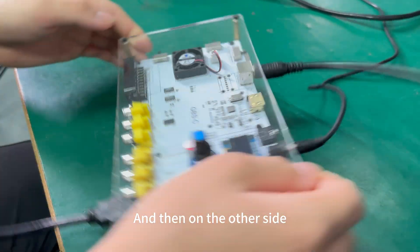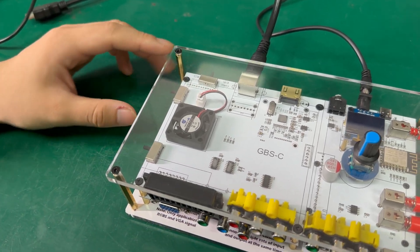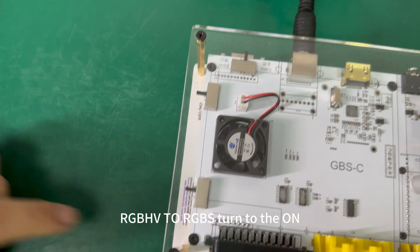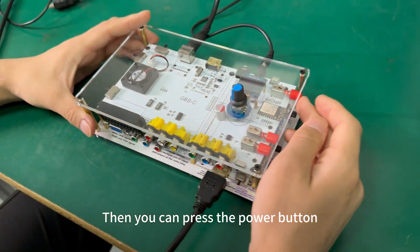And then on the other side, HDMI turn to the off. RGB HV2 or GBS turn to the on. Then you can press the power button.